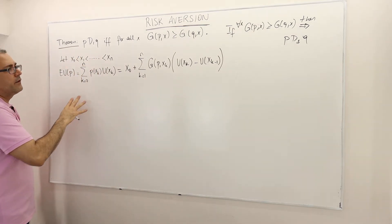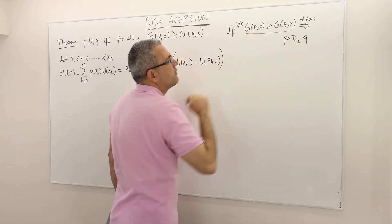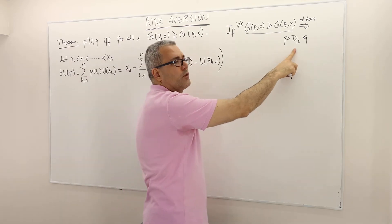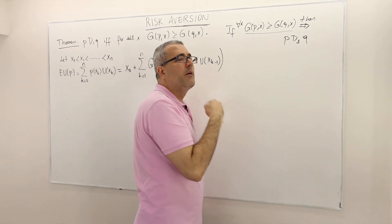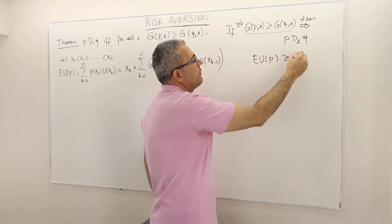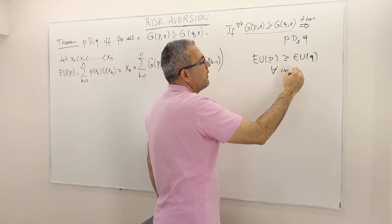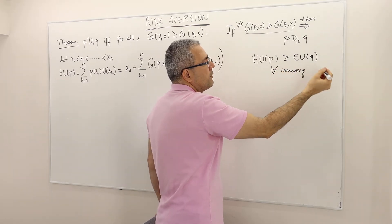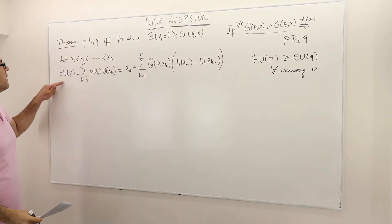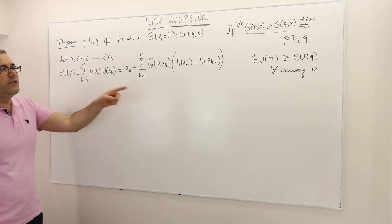So let's first assume that for every X, G of P(X) is greater than or equal to G of Q(X). What we need to show is that P is first-order stochastically dominating Q. By definition, that means the expected utility of P is greater than or equal to the expected utility of Q for all increasing von Neumann-Morgenstern utility functions U. So I need to calculate the expected utility of P and Q and compare them.